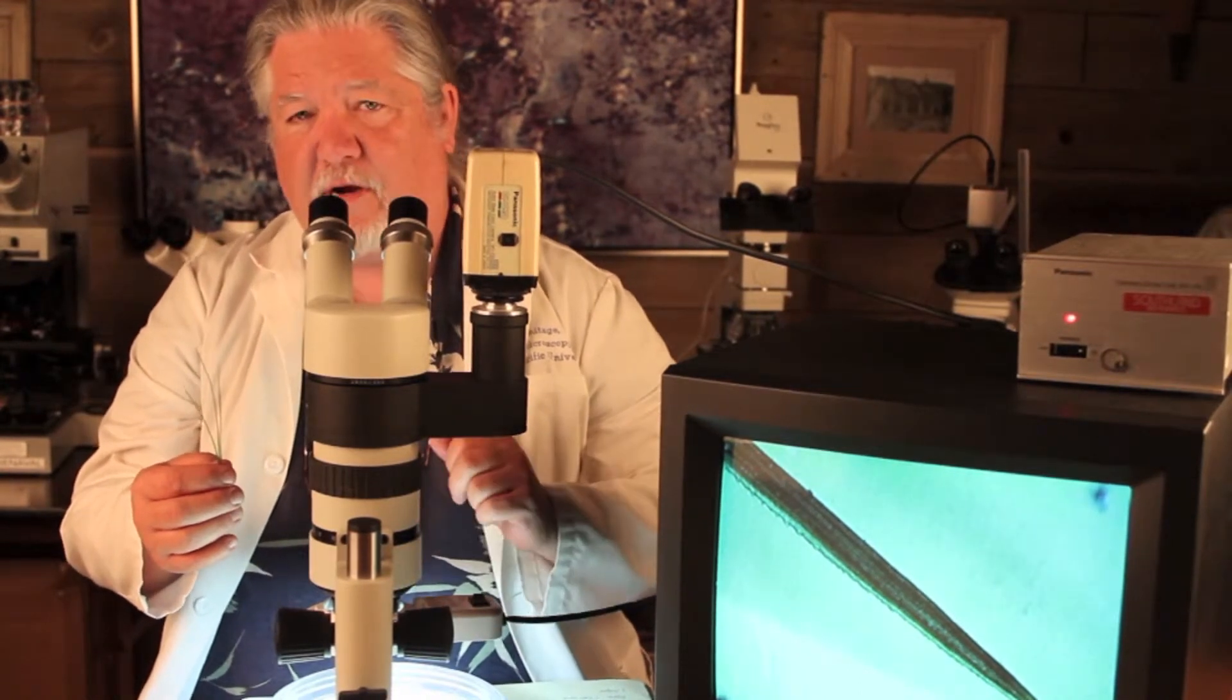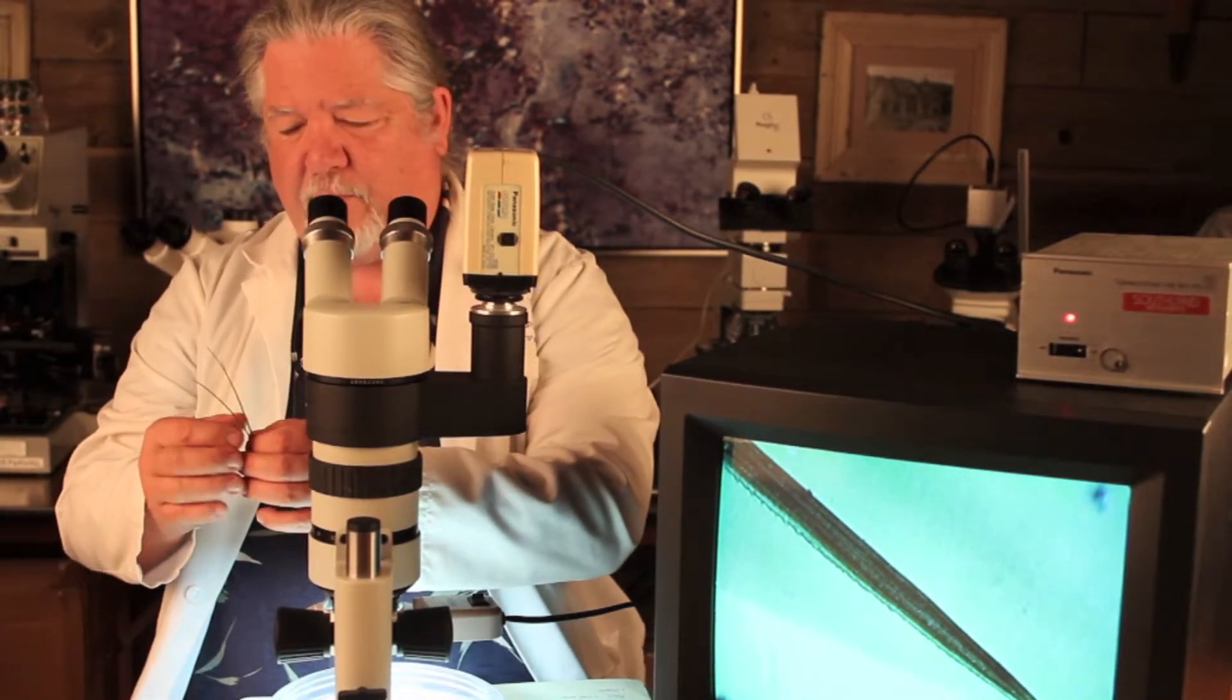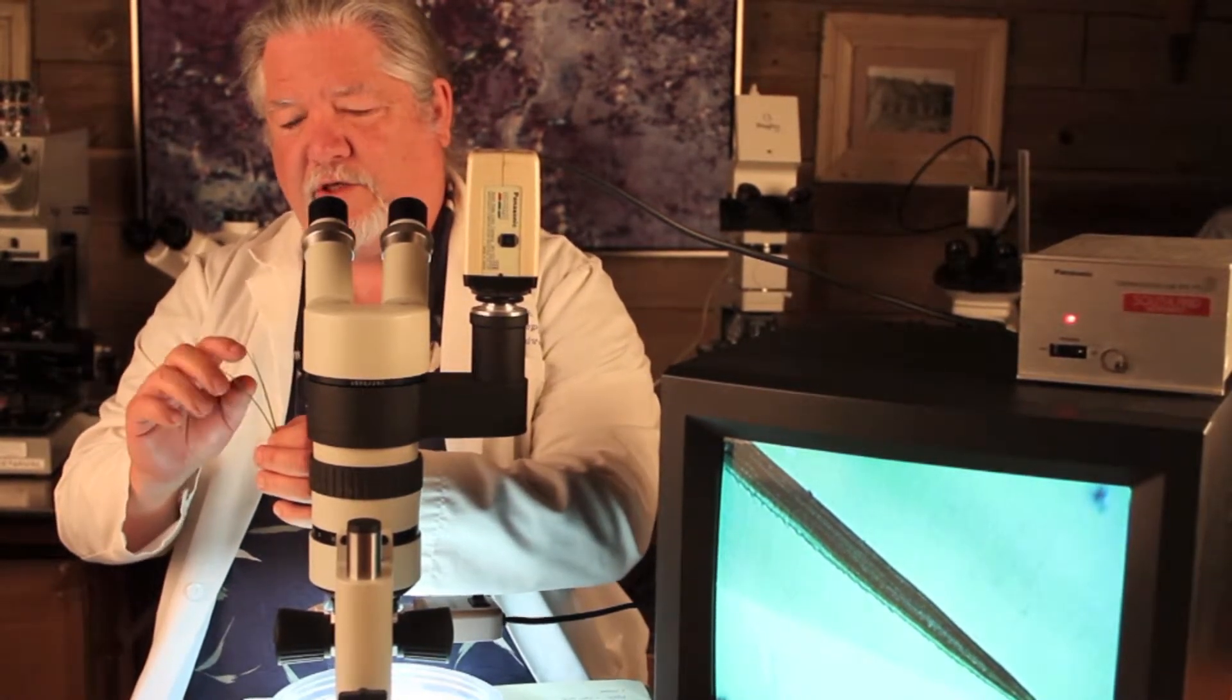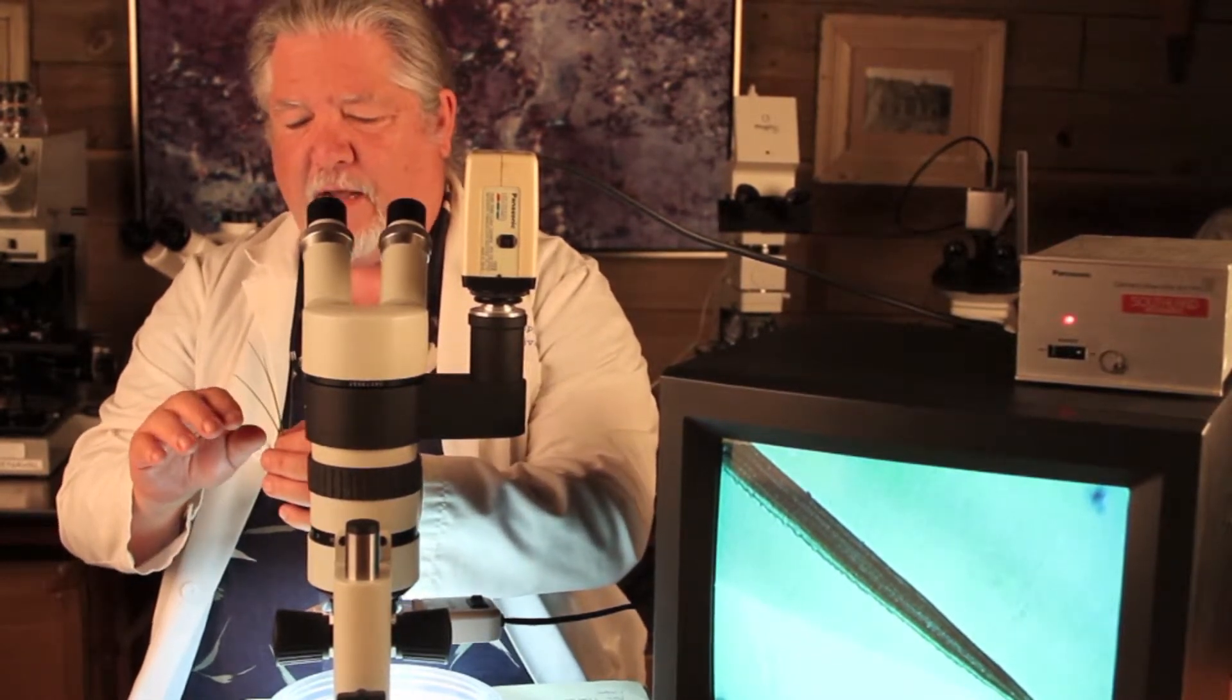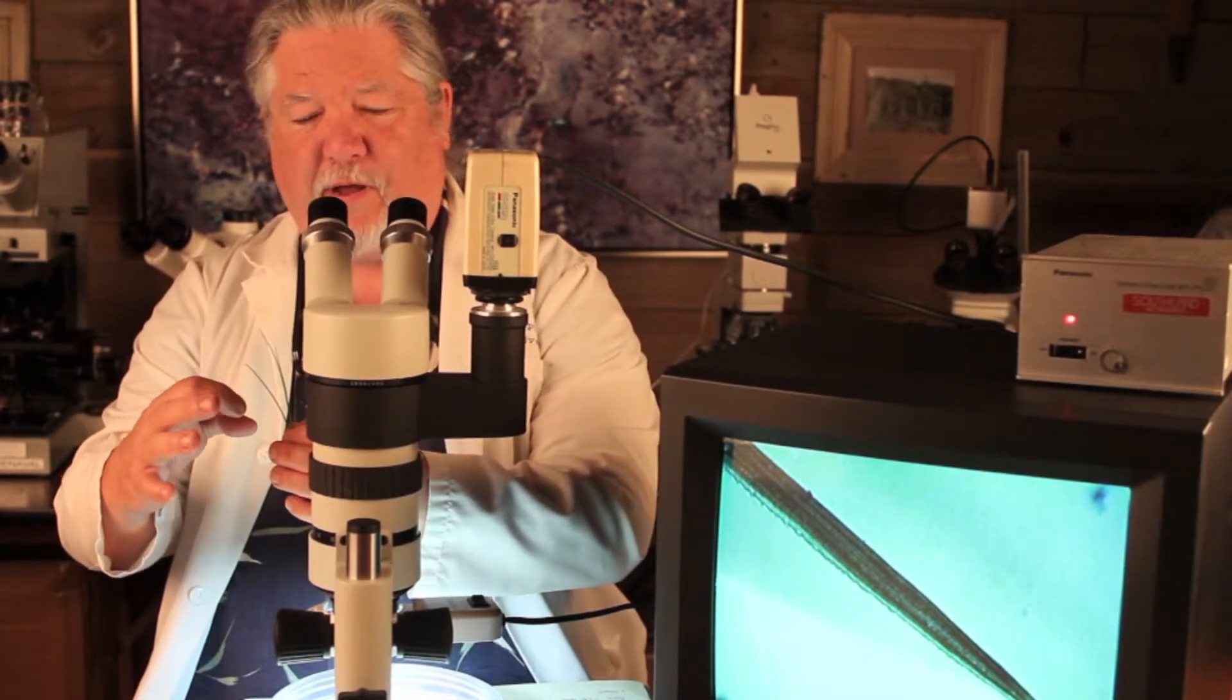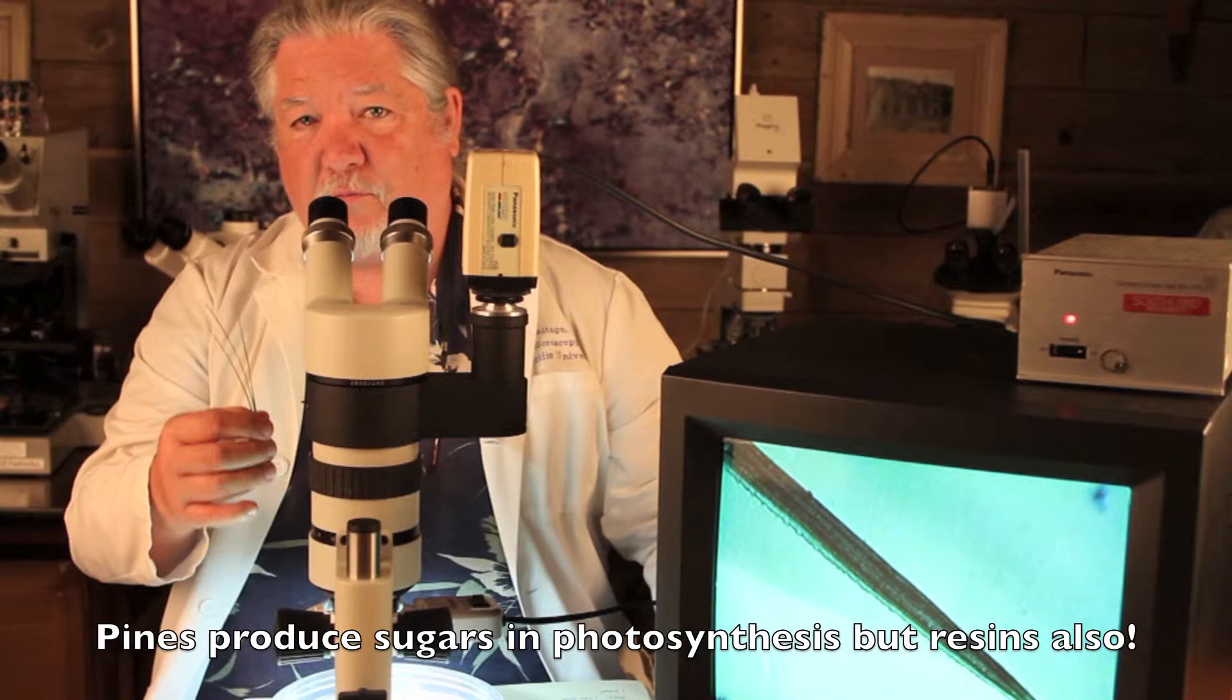And so we're going to try to cut some here while you're watching and make some thin sections. But a couple of other things that I want to mention about these pine needle leaves is that when you thin section them or cross section them, you see different shapes. They can be circular in cross section, they can be oval, they can be triangular, very nicely equilaterally triangular, or you can have a squished triangle where one side is indented. And then you can have cross sections that look like pizza slices. But one thing that's very interesting about them is that they do photosynthesis and they don't produce the usual product that other leaves produce when they're doing photosynthesis.